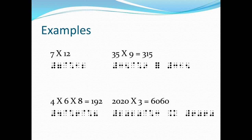For our last example under multiplication, we have 2020 times 3 is equal to 6060. In Nemeth, we write the numeric indicator, then digits 2, 0, 2, 0, the multiplication cross — dot 4 and dots 1 and 6 — then number 3, then a space for the equal sign, and then our product. We write the numeric indicator and then digits 6, 0, 6, 0.